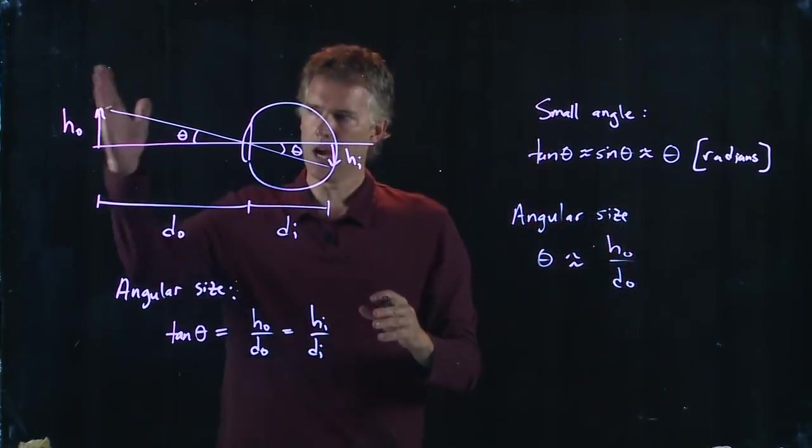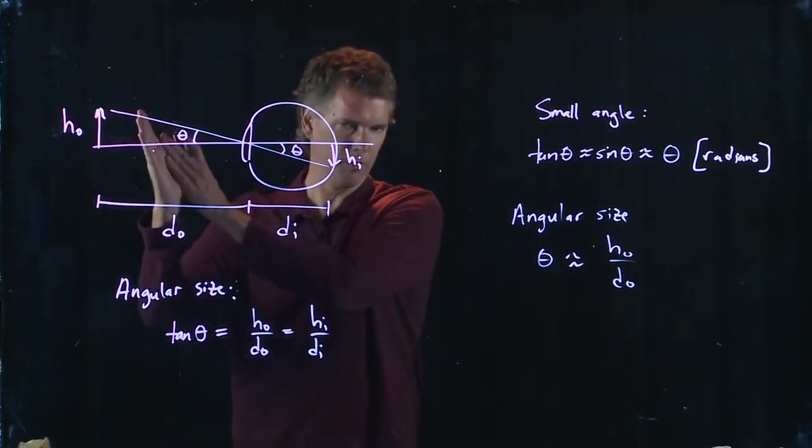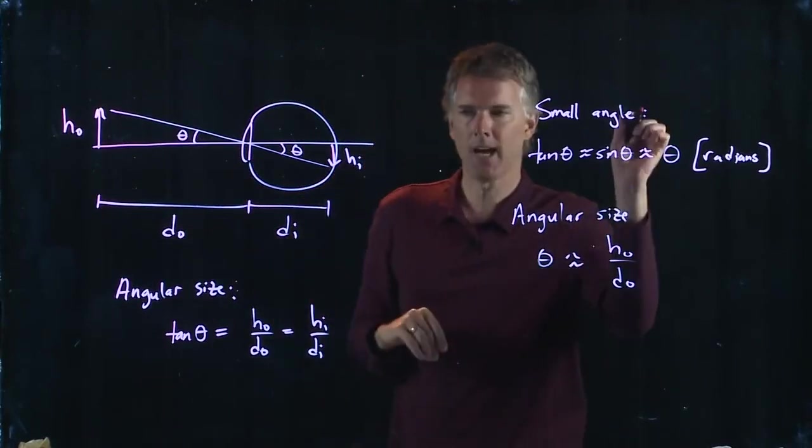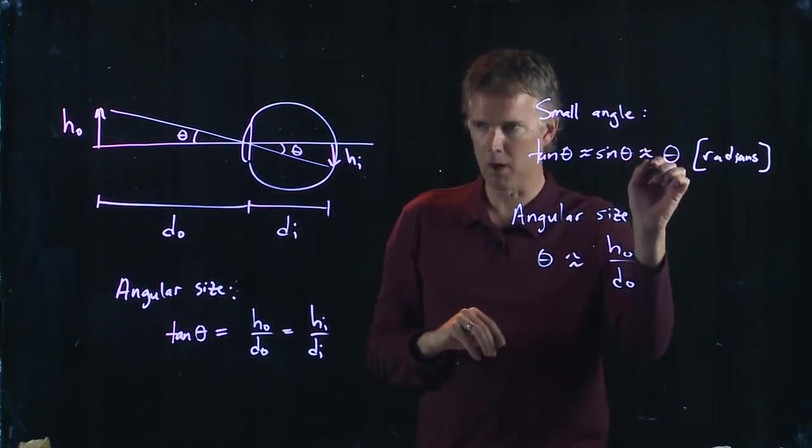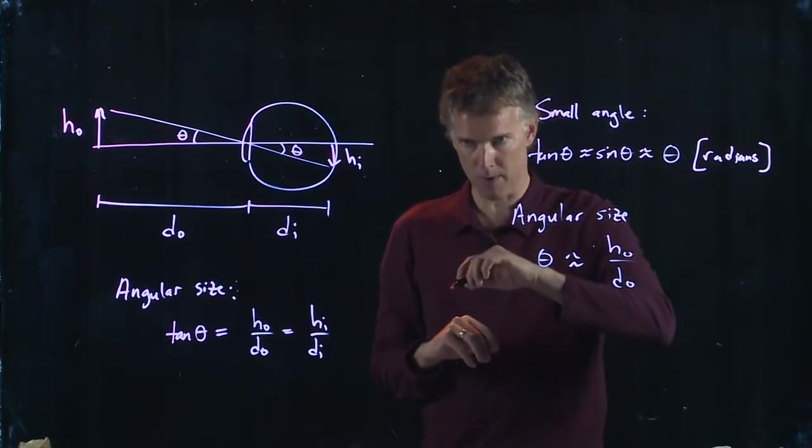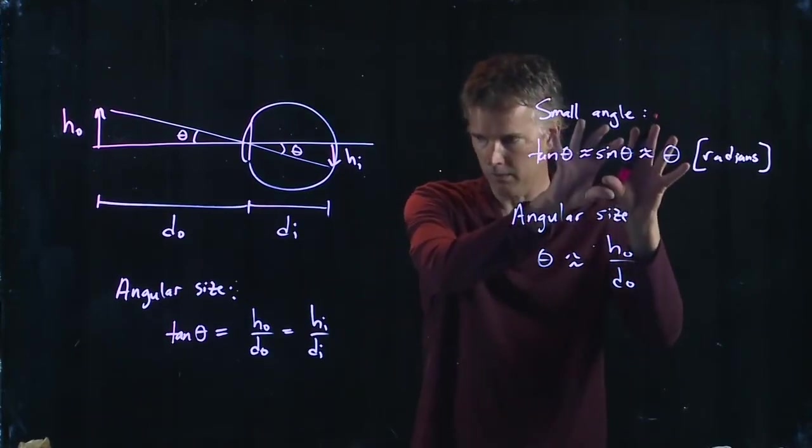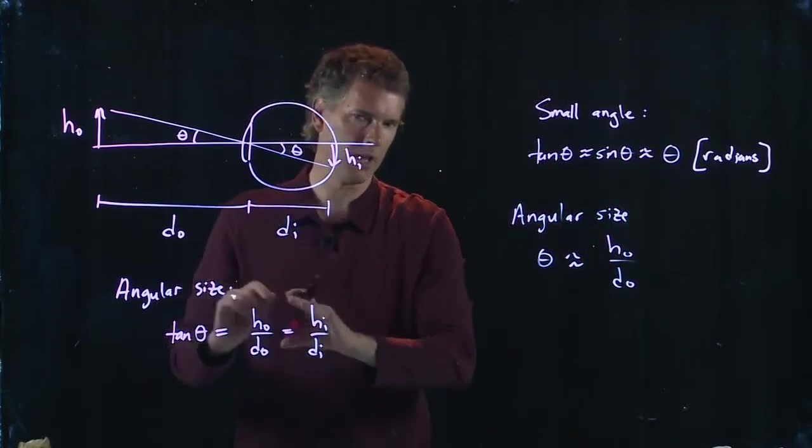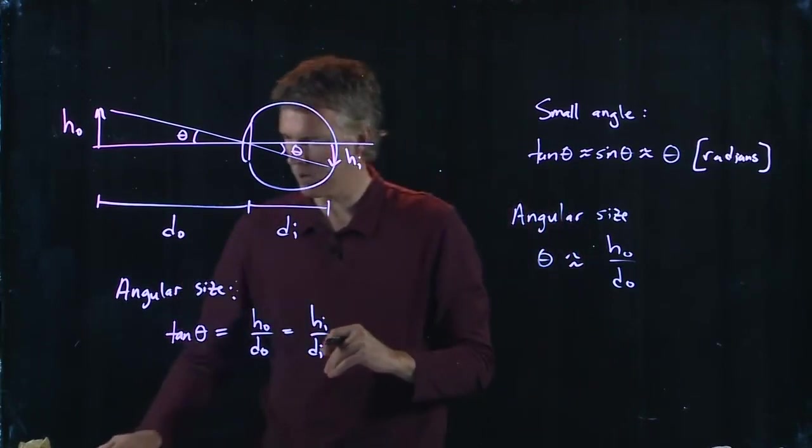it's because the object was so close to the focal point that the image got huge and we might not have been satisfying the small angle approximation anymore. Okay, so when you revisit that problem, look at not doing this but just doing this and trying to solve for theta that way. I think that might be where we went wrong.